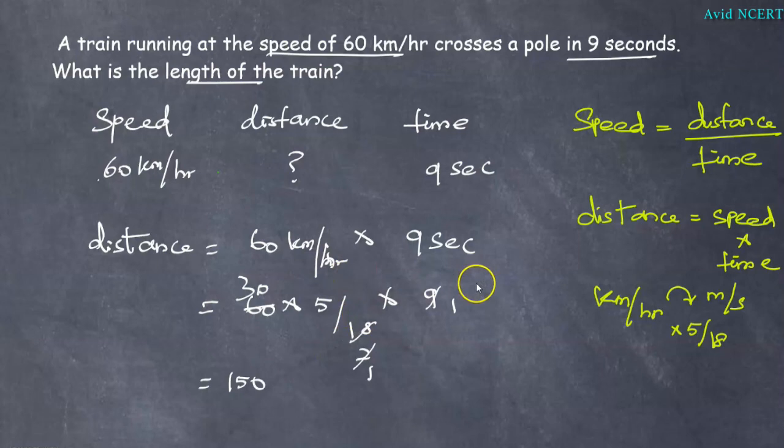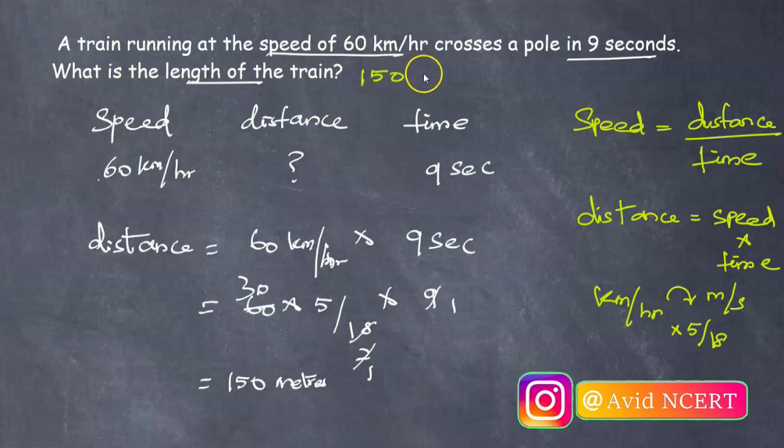This is in meters per second, so the distance is in meters. Therefore, the length of the train is 150 meters.